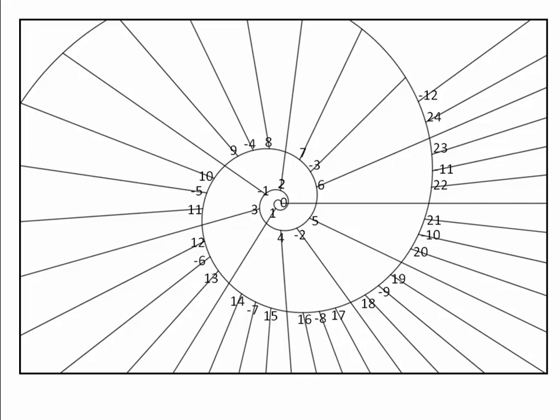Pick a number of the spiral. If it is positive, move forward that number of steps. If it is negative, move backward that number of steps.